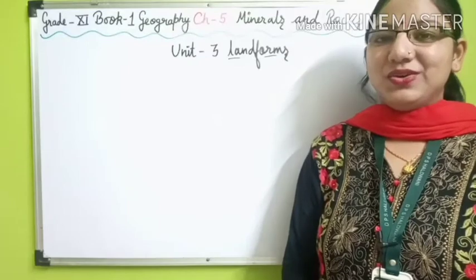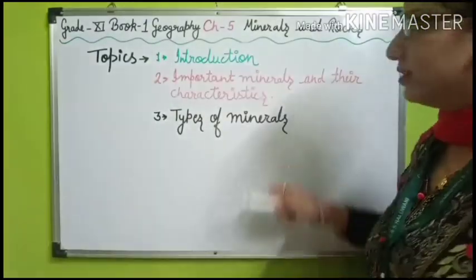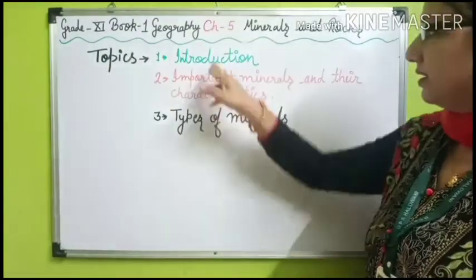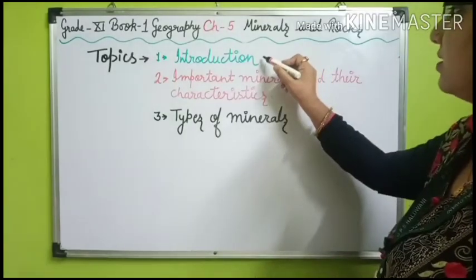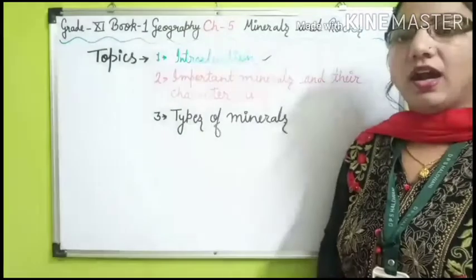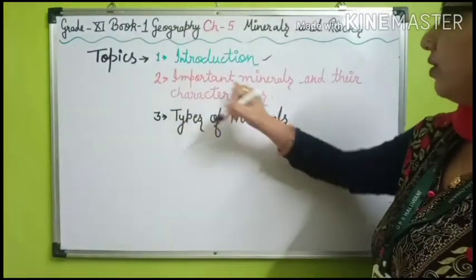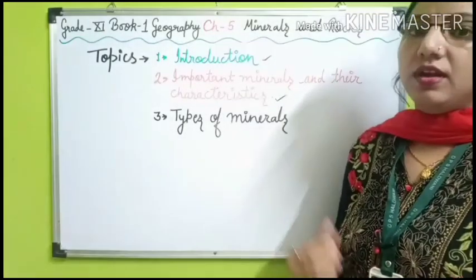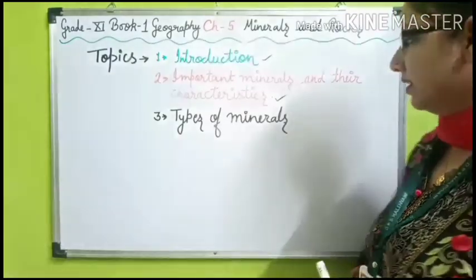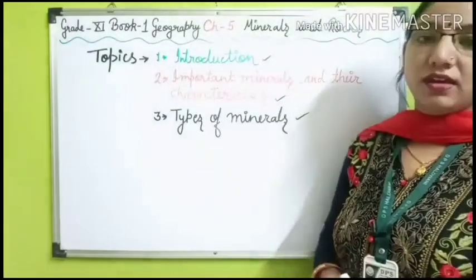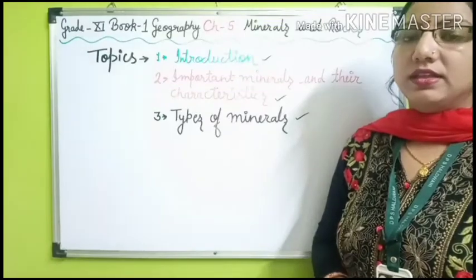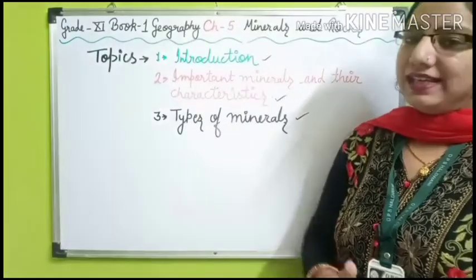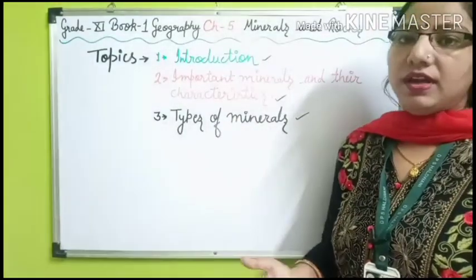This chapter tells us about minerals and rocks. Today we will cover three topics. The first topic is Introduction, in which we will see what minerals are and how they are formed. The second topic is Important Minerals and their Characteristics, where we will see how many minerals are important and what their characteristics are. The third topic is the Types of Minerals, in which we will see the two main types: metallic and non-metallic.